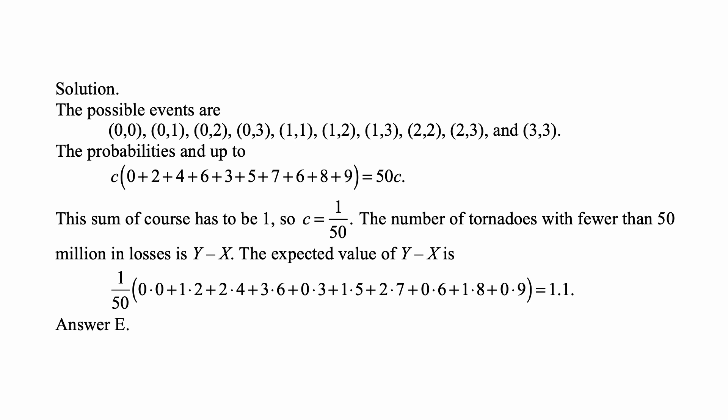The probabilities, based on the formula we have, add up to C times (0 + 2 + 4 + 6 + 3 + 5 + 7 + 6 + 8 + 9), and that turns out to be 50C. This sum, of course, has to be 1, so C is 1 over 50.